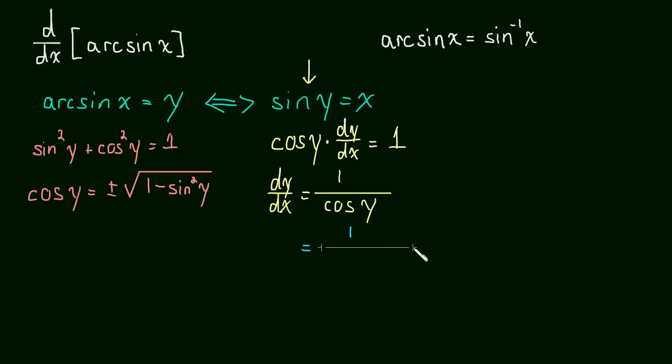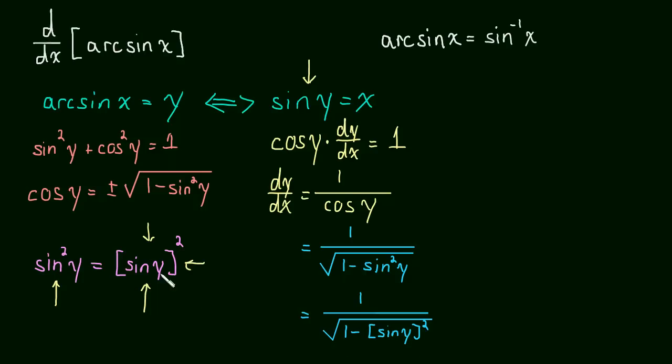So this is 1 over the square root of 1 minus sine squared y. And now I'm going to rewrite this as 1 over the square root of 1 minus sine of y squared. Just a reminder, sine squared y is actually an abbreviation for this. This expression on the left-hand side is an abbreviation for this. This is really what we do when we write sine squared y. So I'm just rewriting it to be more clear because I think that will help once we make our substitution.